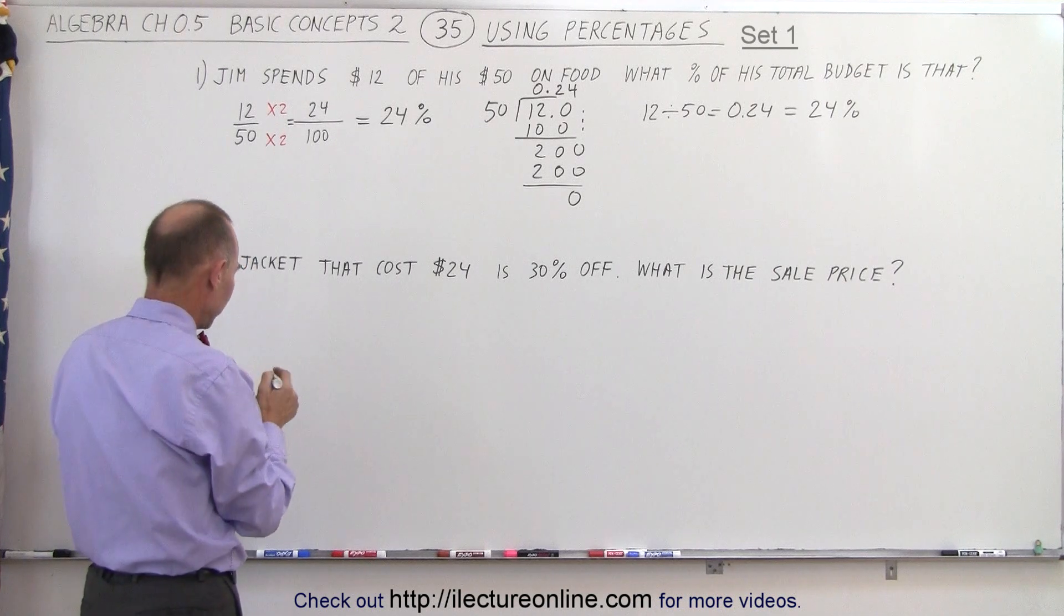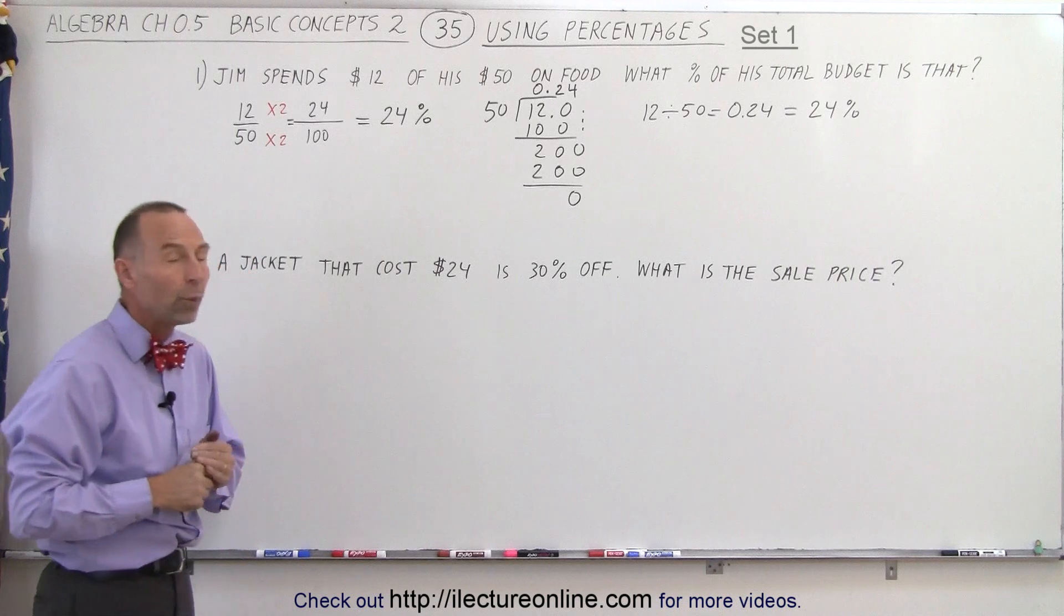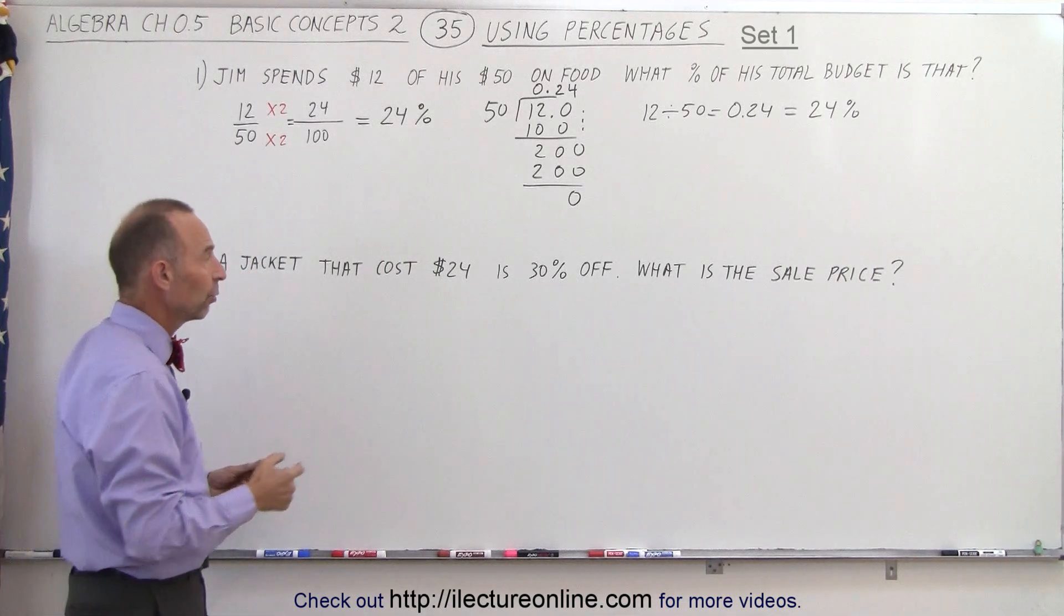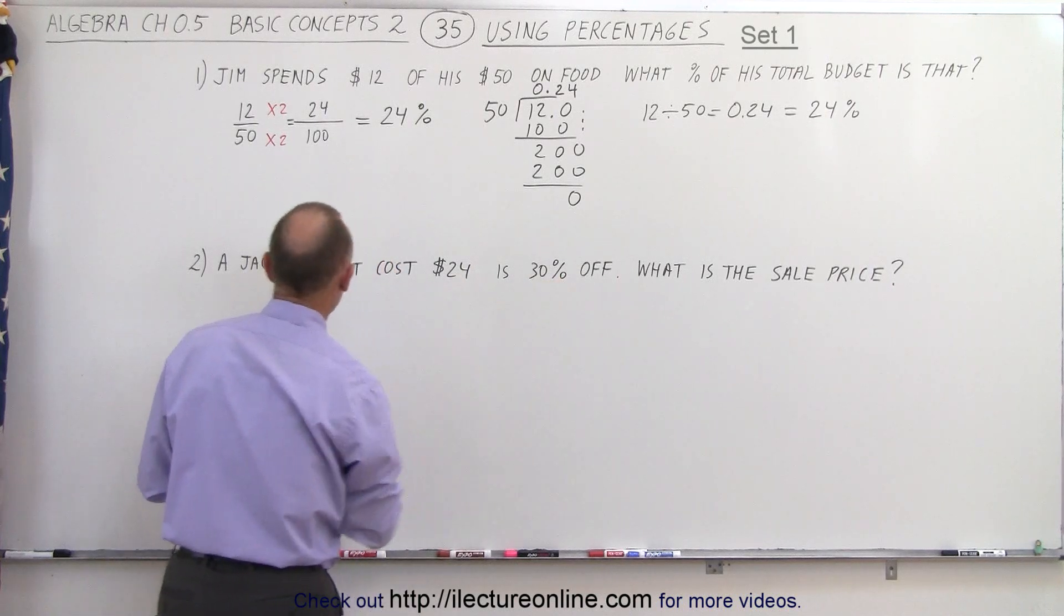Let's say the next problem states that a jacket that costs $24 is 30% off. What is the sale price? First we need to figure out what 30% of 24 is.